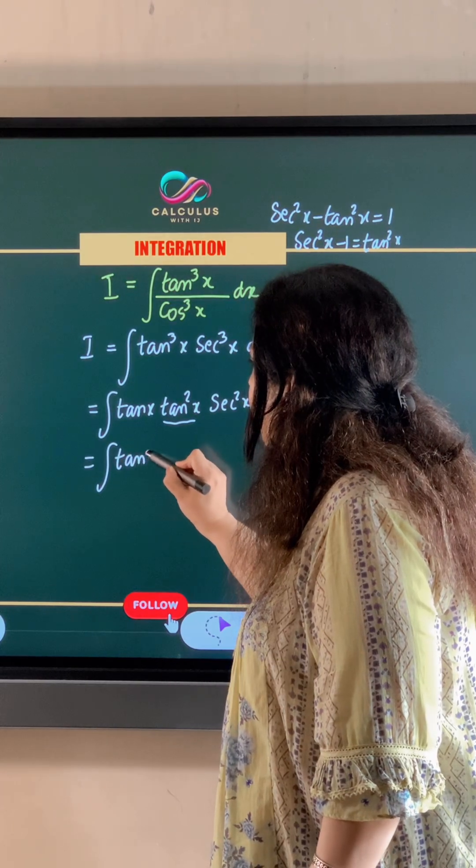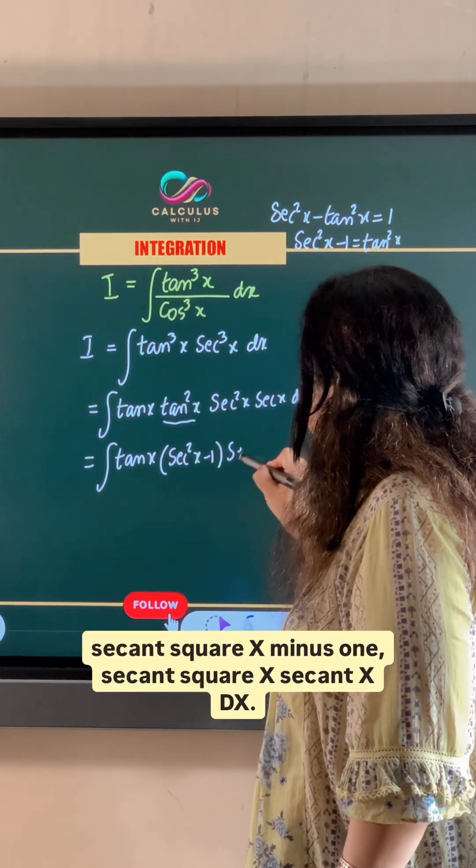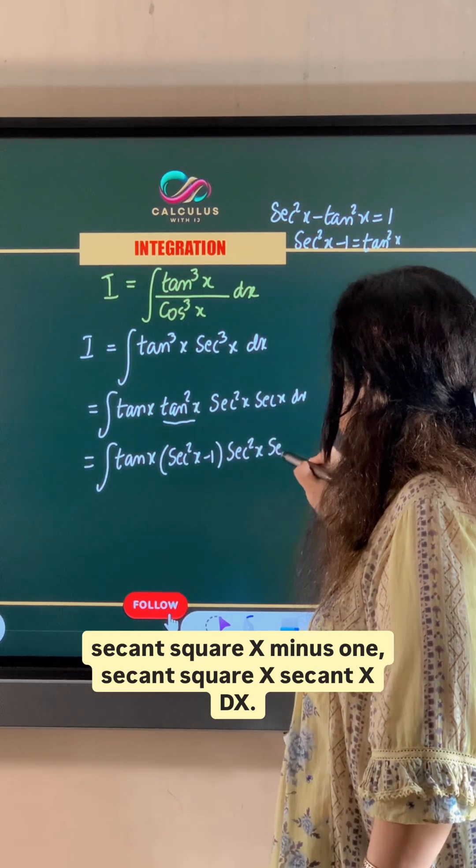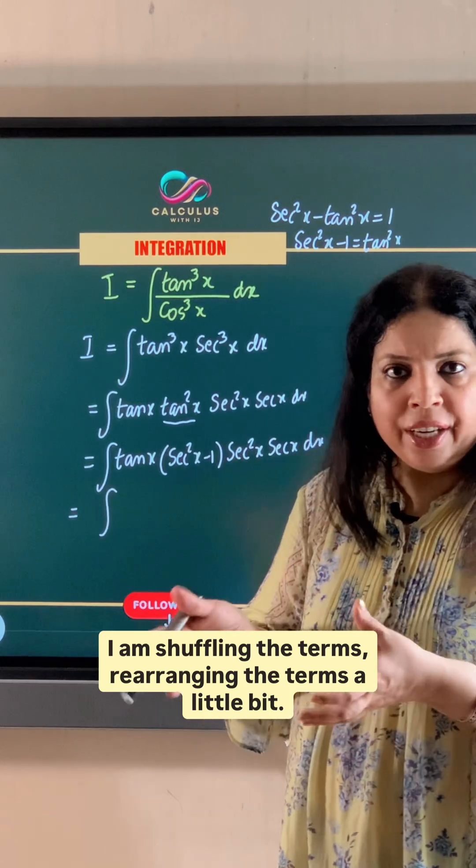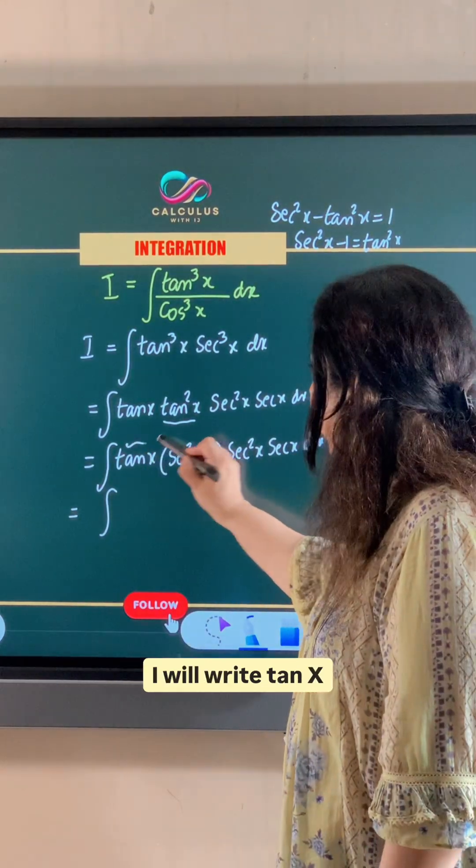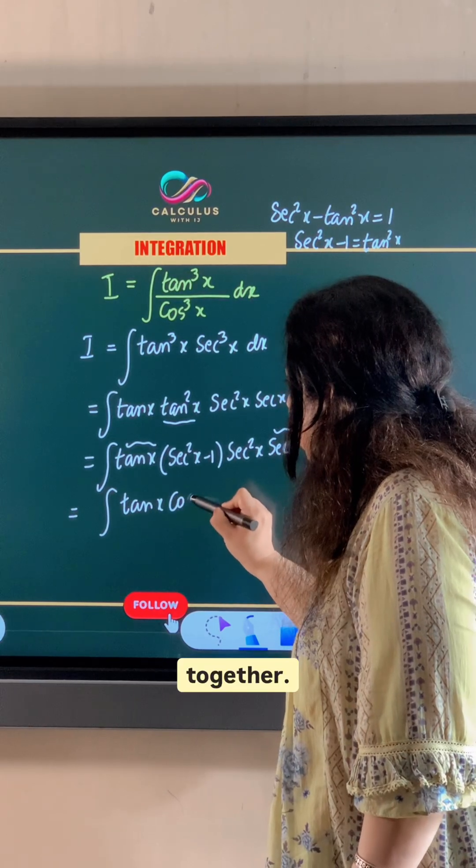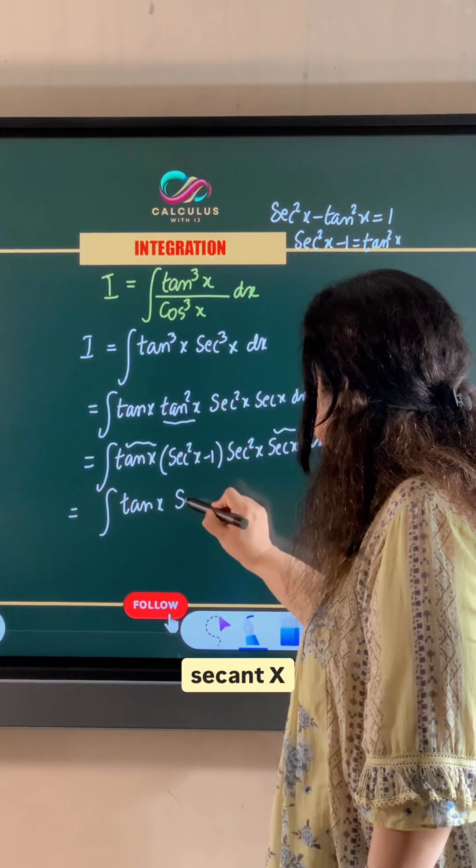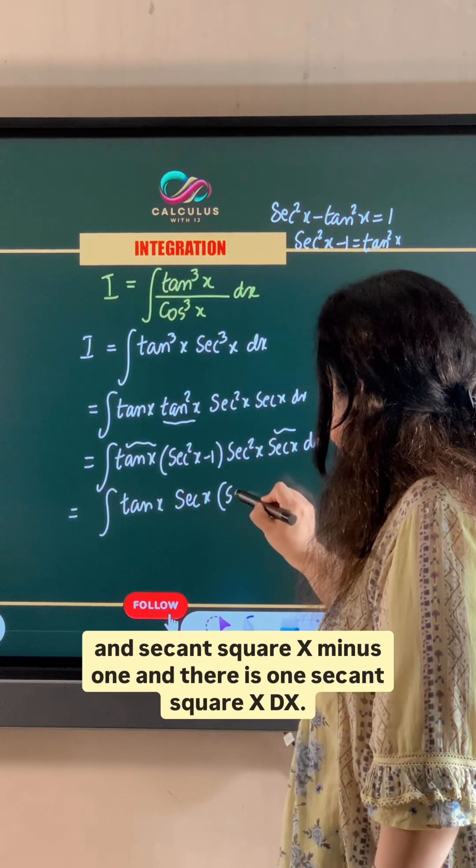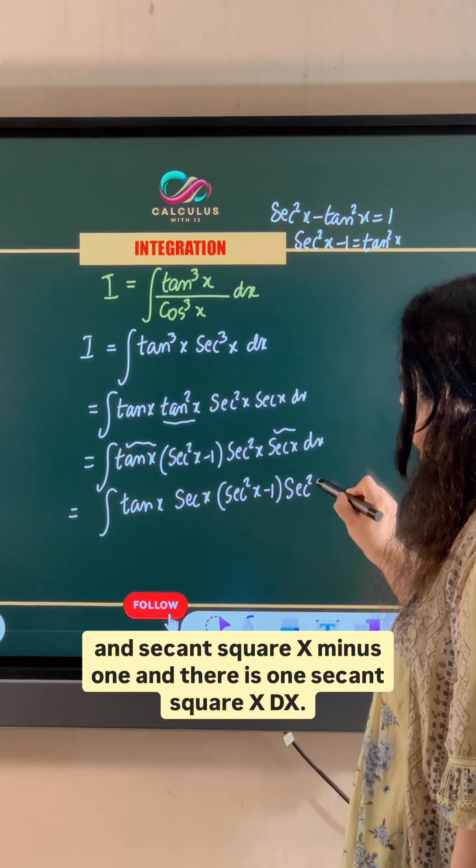So put tan x secant square x minus 1 secant square x secant x dx. I am shuffling the terms, rearranging the terms a little bit. I will write tan x secant square x together.